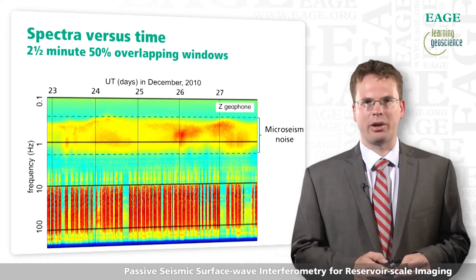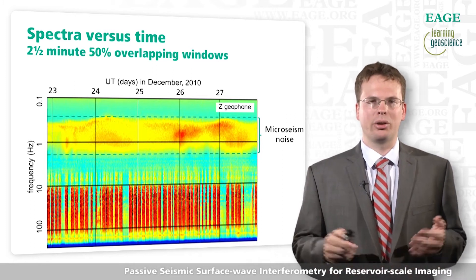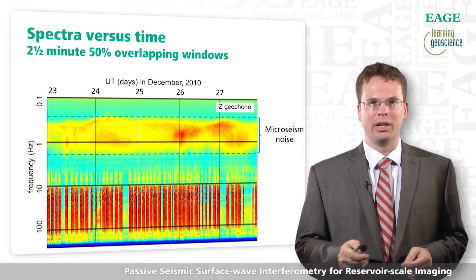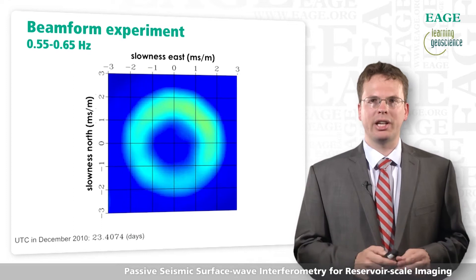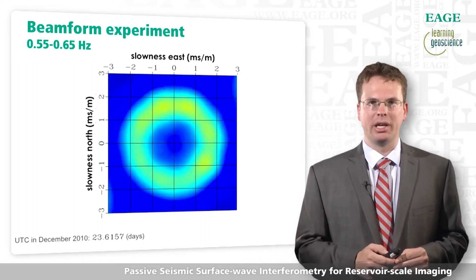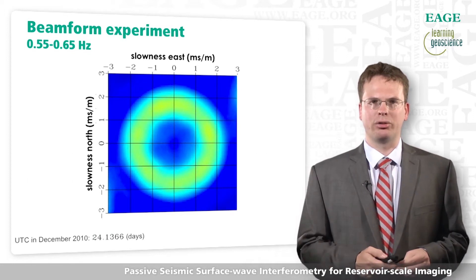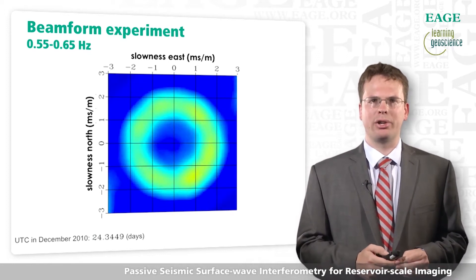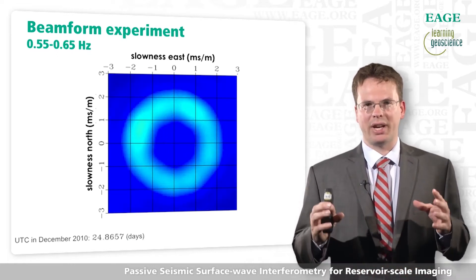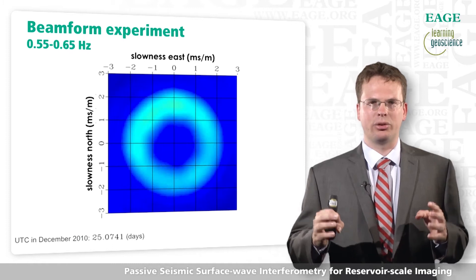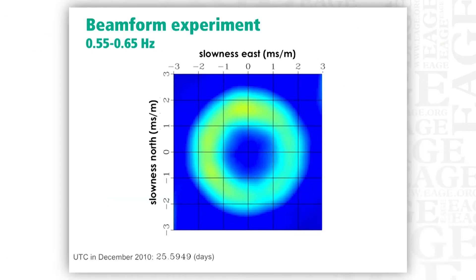Let's look more at this microseismic noise — is it the same during the whole recording? Does it come from the same places? No, it doesn't at all. In this slide I show a beamforming experiment to find out where the energy comes from at a given time. Although the energy travels from most directions with roughly equal strength, there are some time periods where it is quite a bit stronger from one side than the other. However, the fact that it is relatively equally strong and incident from all directions homogeneously does make it quite suitable for seismic interferometry.